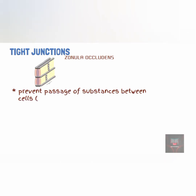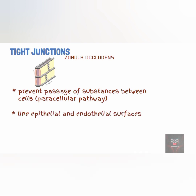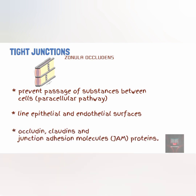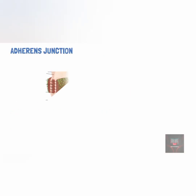It prevents the passage of substances in between the cells, referred to as the paracellular pathway of substance transportation. It lines epithelial and endothelial surfaces, forming a tight bond between the cells, thereby preventing leakage of the contents of the organs. The proteins that make up tight junctions include occludins, claudins, and junction adhesion molecules.